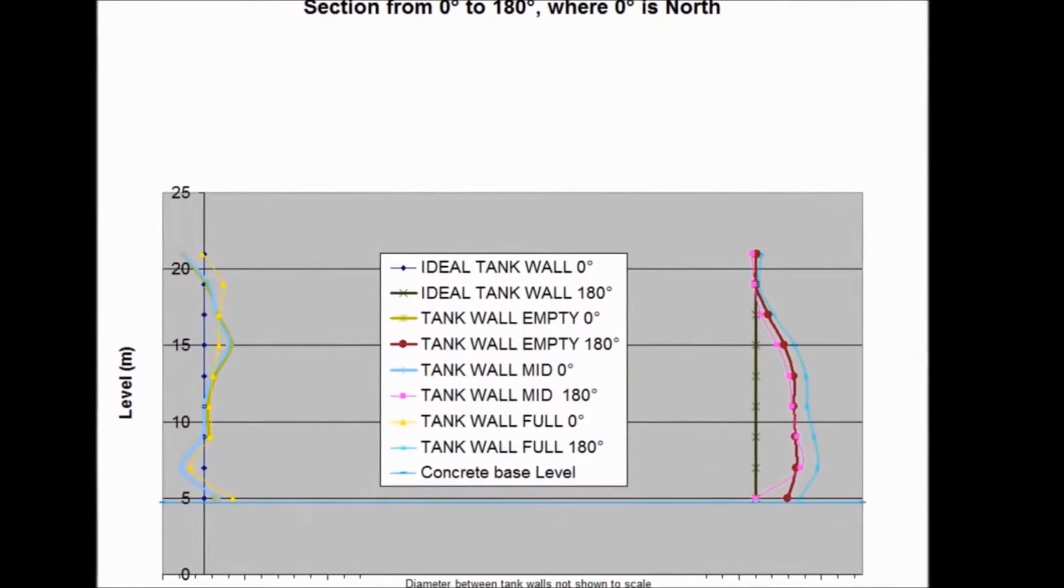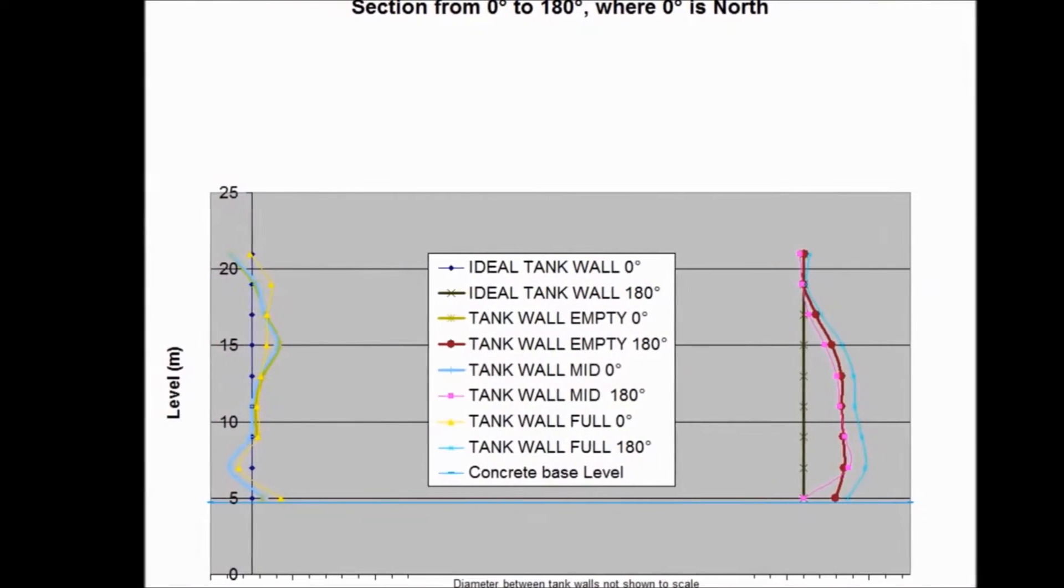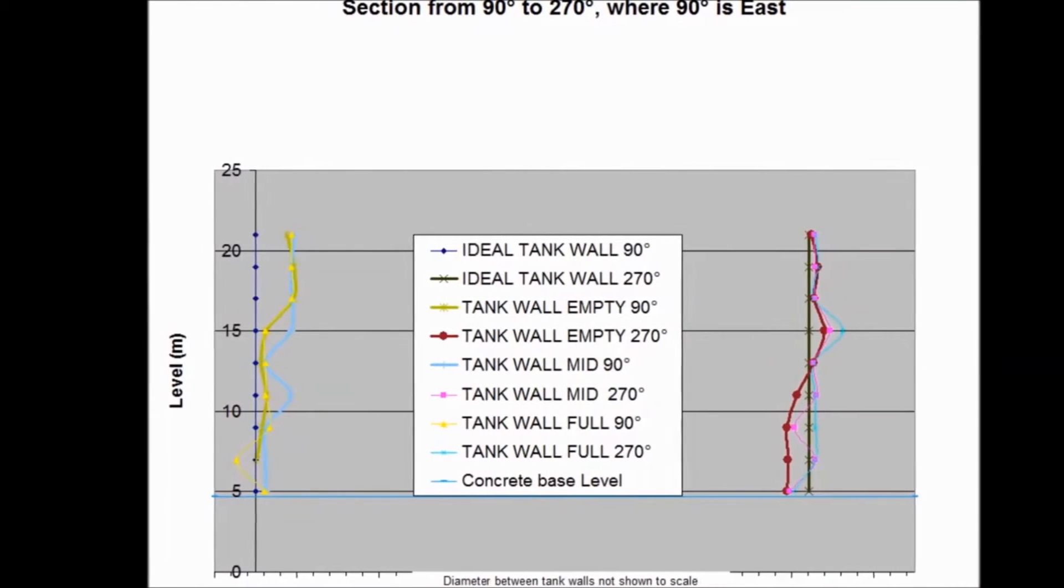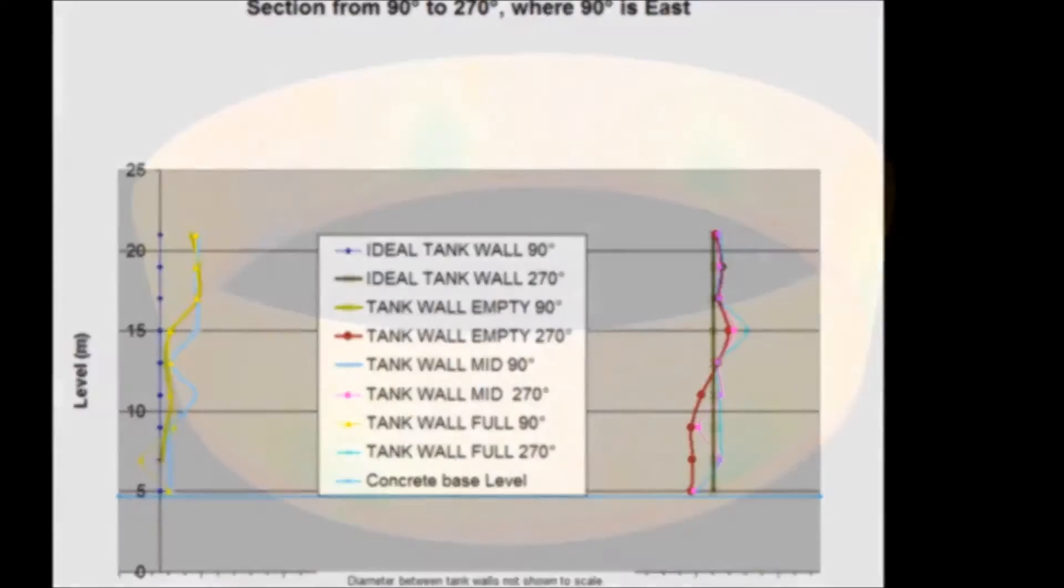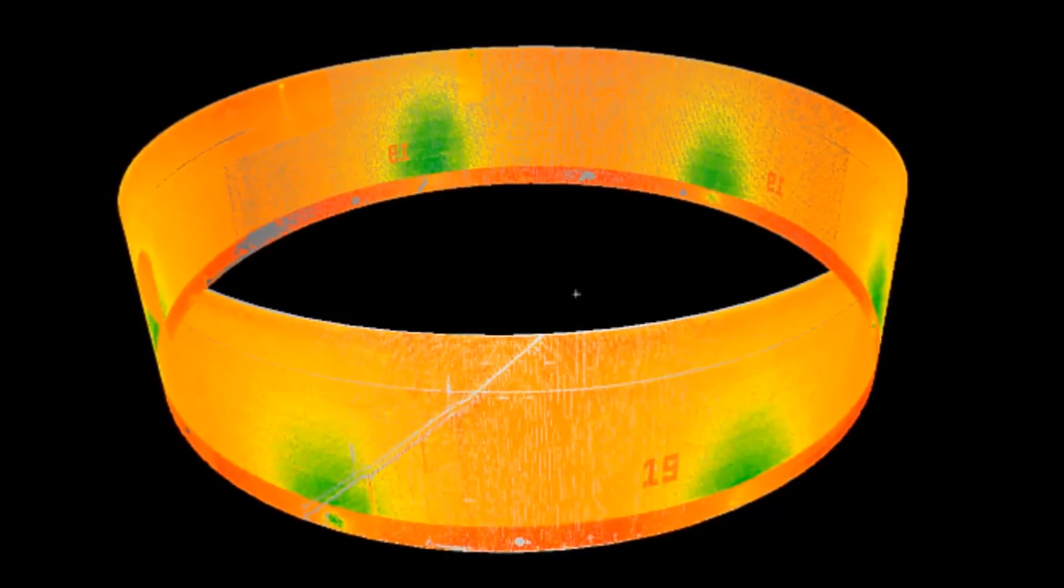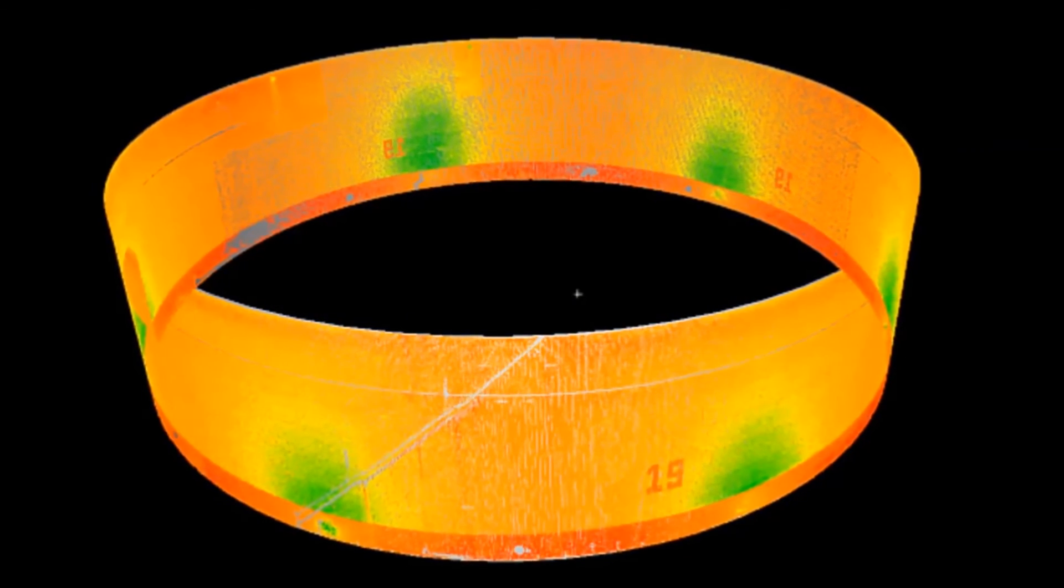These graphs show the variation in verticality throughout the tank wall's height. We create a section from 0 to 180 degrees and also at 90 to 270 degrees. This allows us to report the vertical angle north-south and east-west.